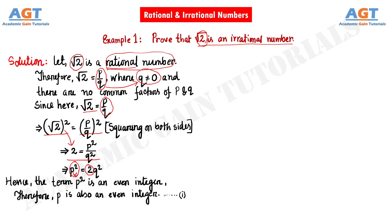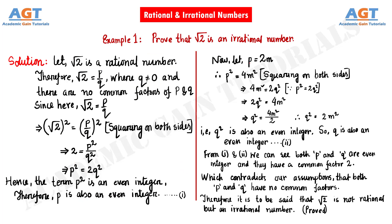Now let us assume that P is equal to twice M. Squaring both sides of this equation, we get P square equals 2M whole square, which gives us P square equals 4M square. Now from our earlier equation, we also have P square equal to twice Q square. So putting the value of P square, we get 4M square equals twice Q square.